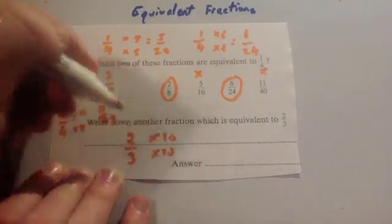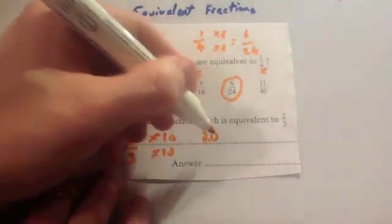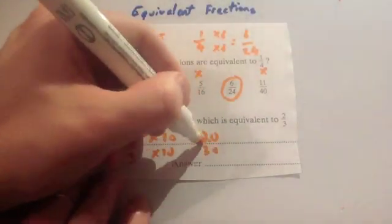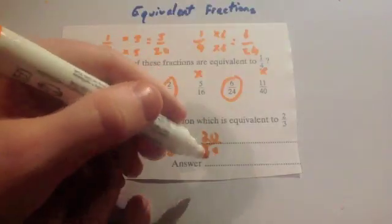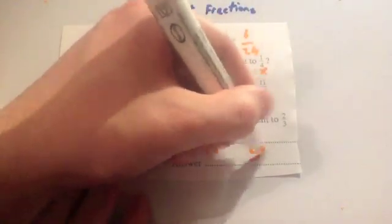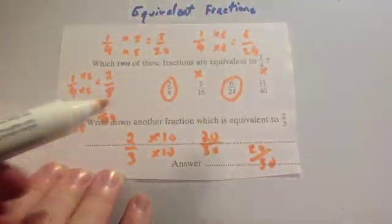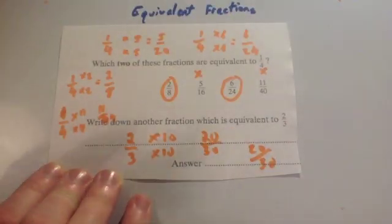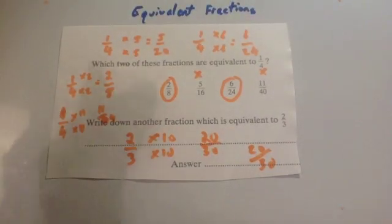That's what I'm actually going to do. So times by 10. 2 times 10 is 20. 3 times 10 is 30. So 2 thirds is the same as 20 thirtieths. So my answer is 20 thirtieths. There's actually loads of different answers—you could do this infinitely. And that's it.